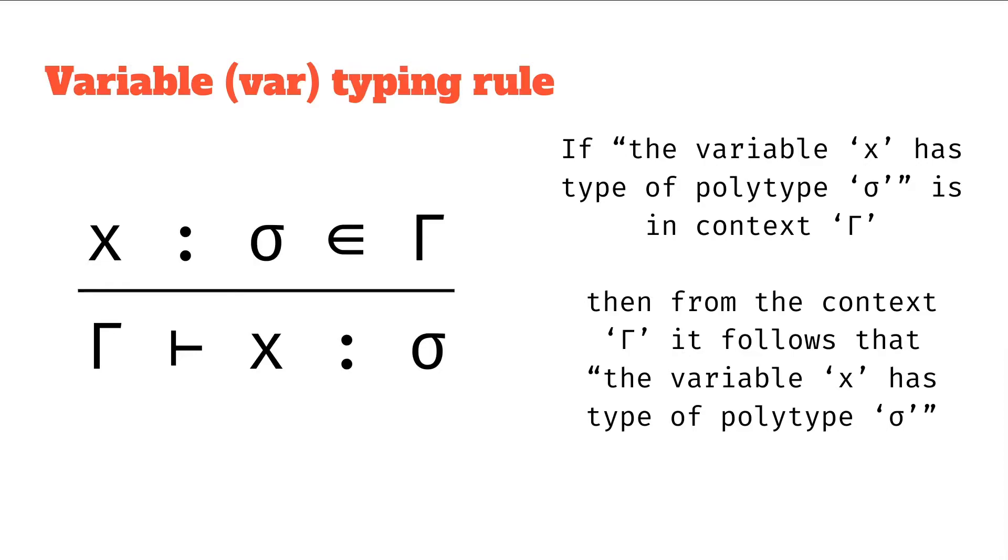The second reaction you might have is, isn't this kind of obvious? Aren't we just stating the same thing again twice? And if you think that, then you're also correct. We are effectively just pulling our assignment out of the context. That's a valuable thing to do. And this is the simplest typing rule.